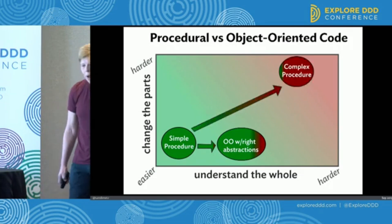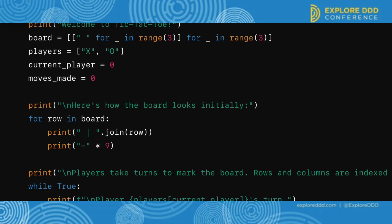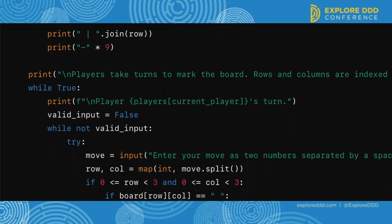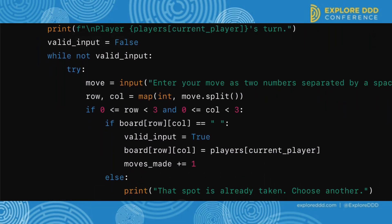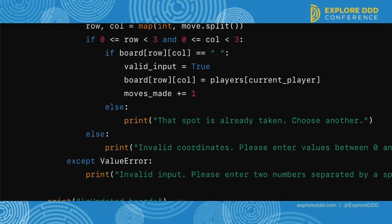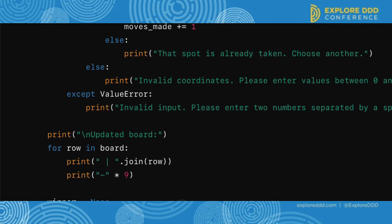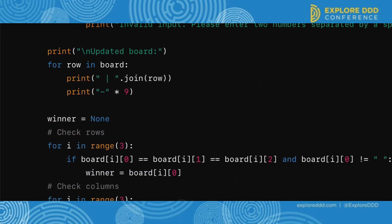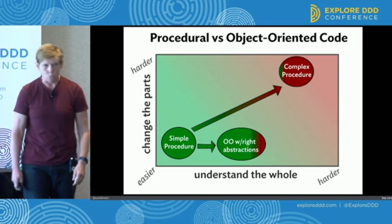The problem with simple procedures is they don't scale over time. They get big and they accumulate conditionals, which makes them really hard to understand. They move far up into the right-hand corner of this chart.